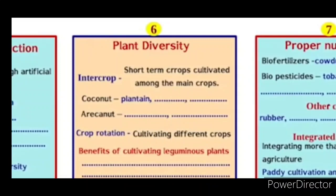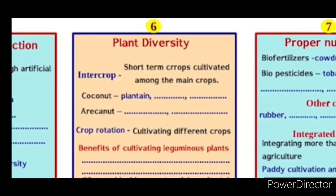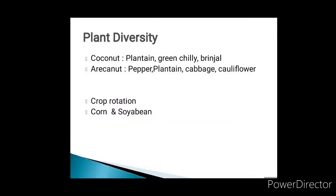What are inter-crops and plant diversity? Inter-crops include pepper, plantain, cabbage, and cauliflower. We also have crop rotation — for example, corn and soybean. Crop rotation involves planting different crops in the same field in successive seasons.